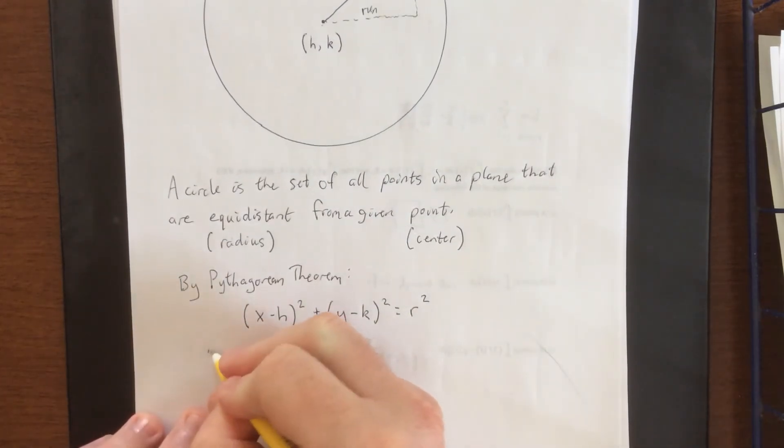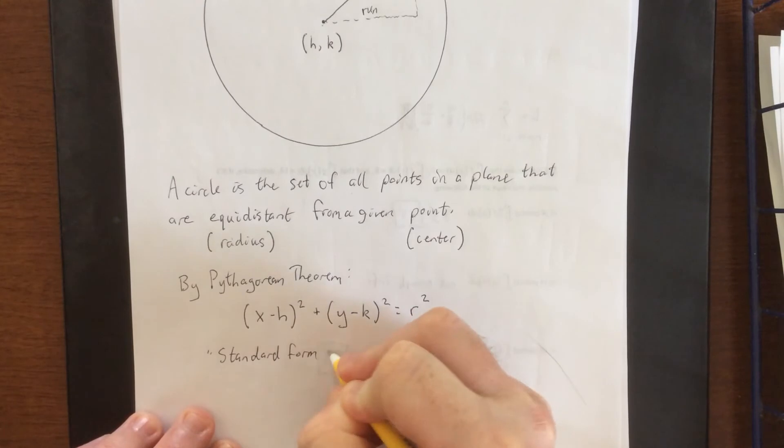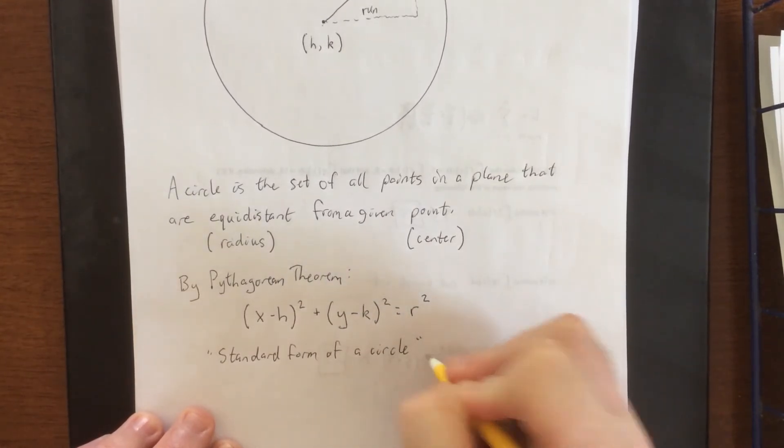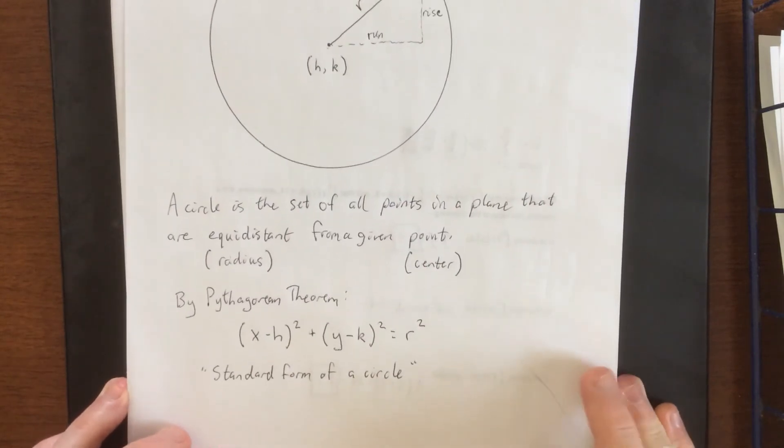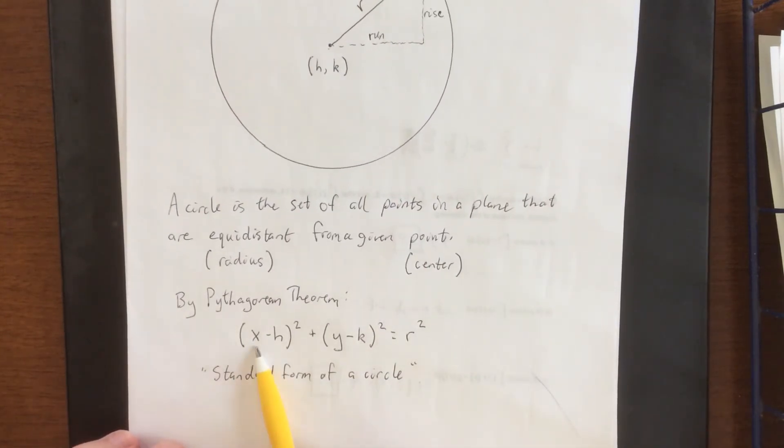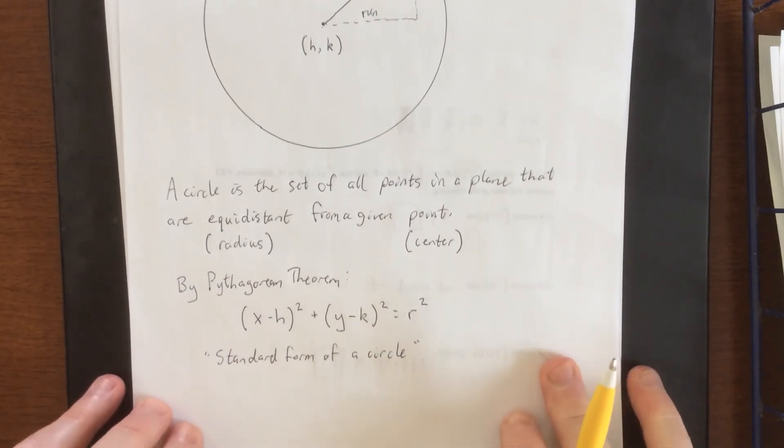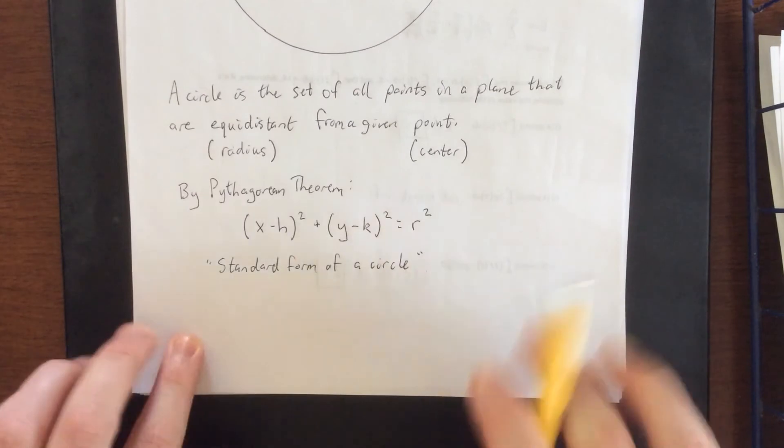What you're looking at here is referred to as the standard form of a circle. Standard form of a circle gives us the most information. Whatever number is being subtracted from X, that would be the X coordinate of the center, and whatever coordinate is subtracted from Y, that would be the Y coordinate of the circle.